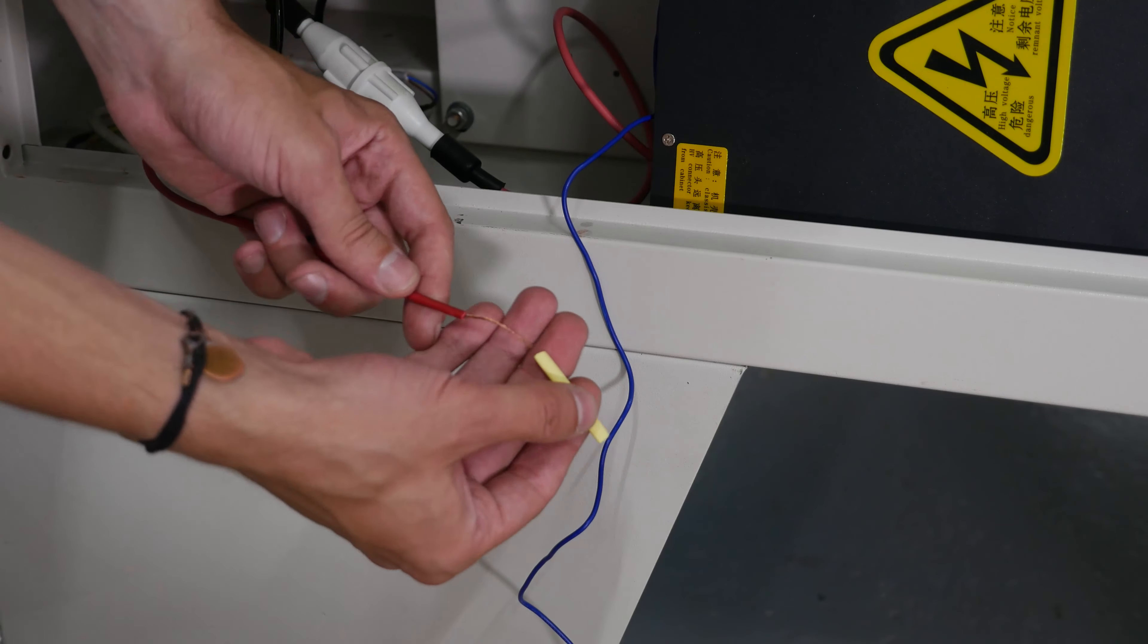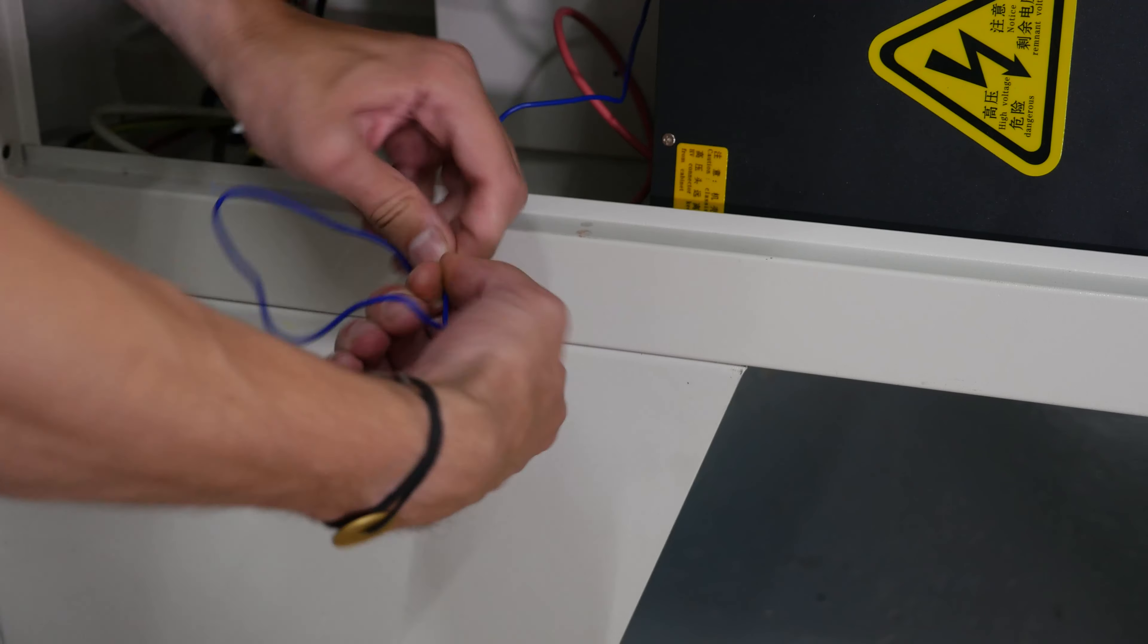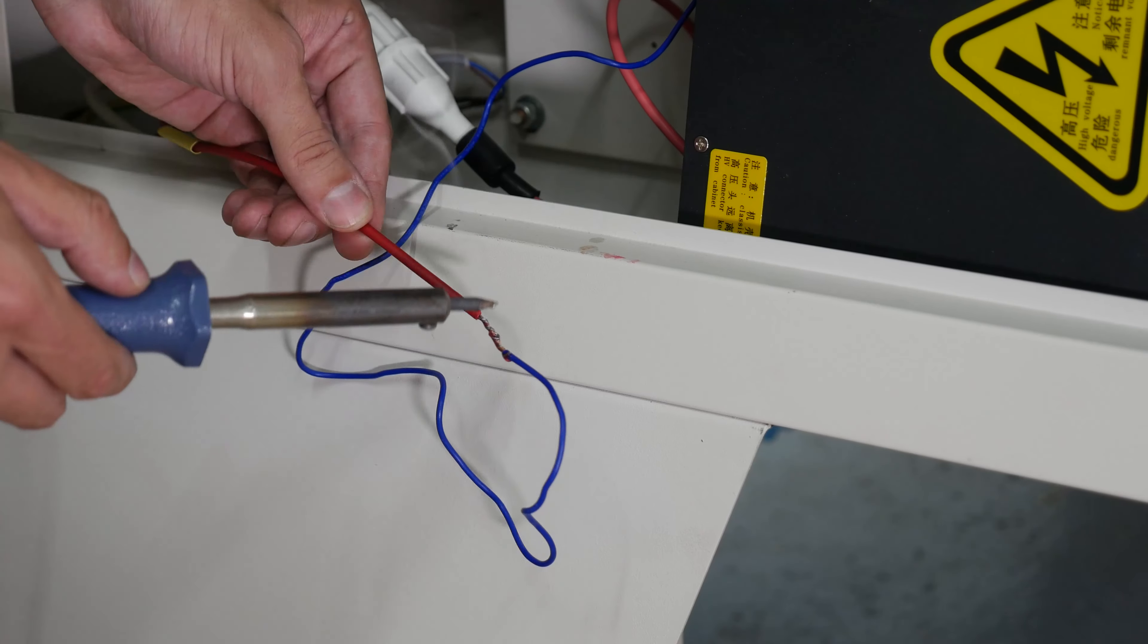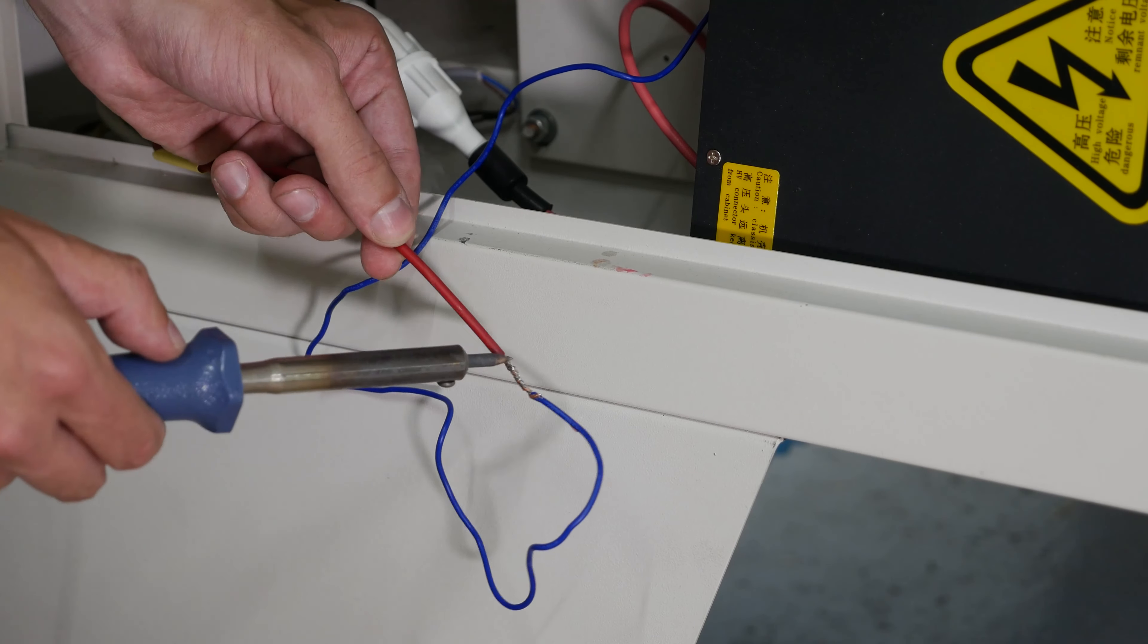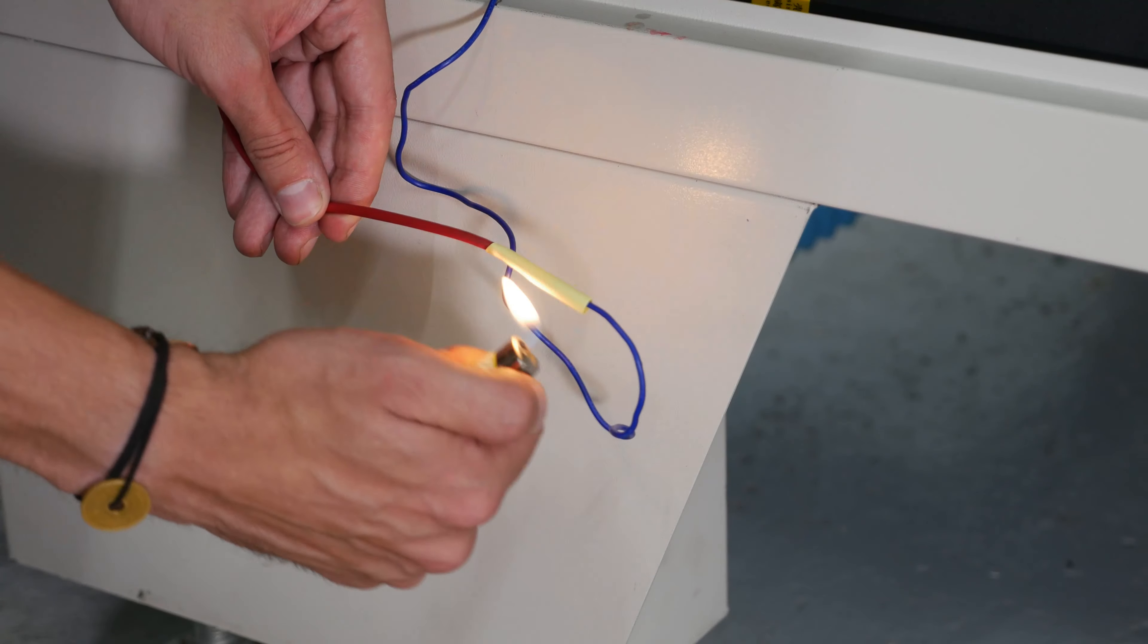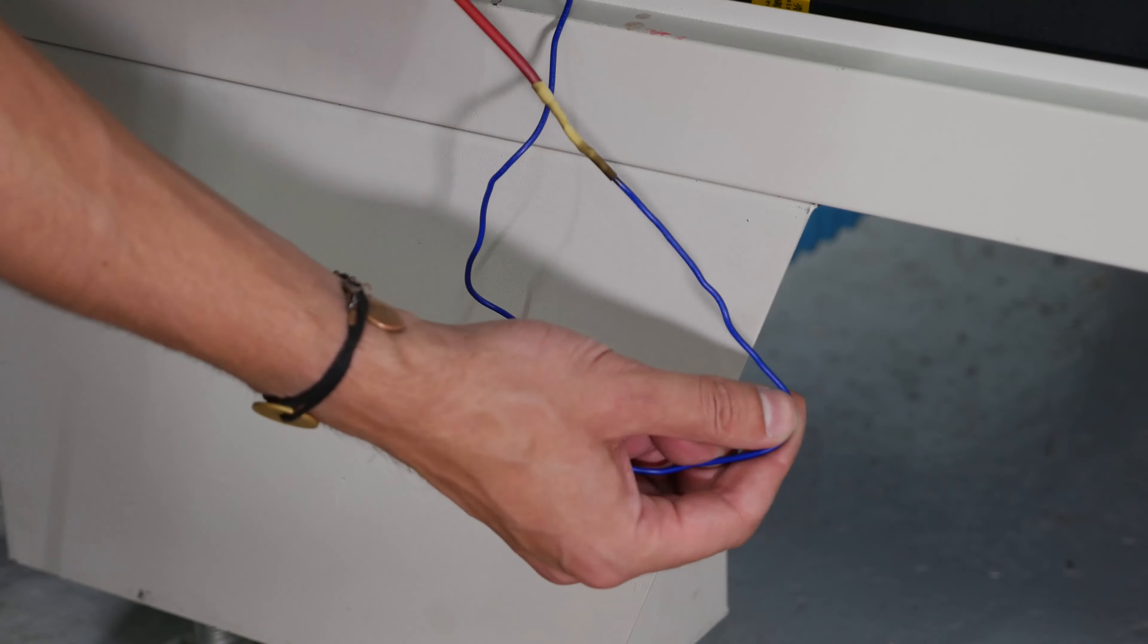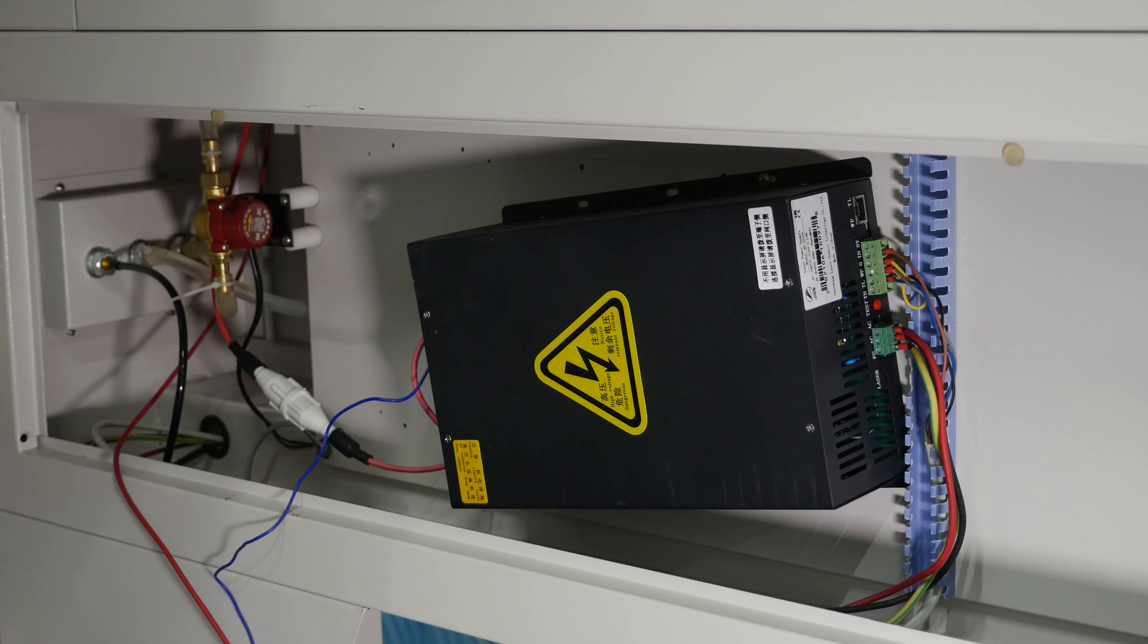Now you need to solder the cable that goes to the cathode of the laser tube. Place a heat shrink sleeve on the brazing joint. Skin and twist the wires. Solder the wires. Place a heat shrink sleeve on the brazing joint and heat it up to insulate the joint. Attach the high voltage unit to the machine's bed again.